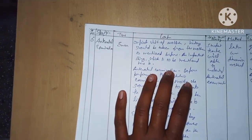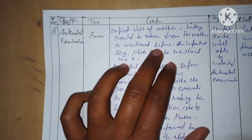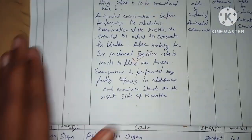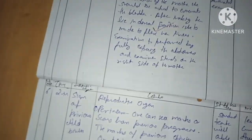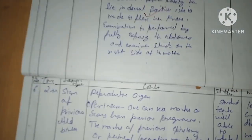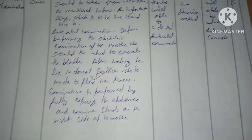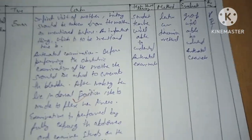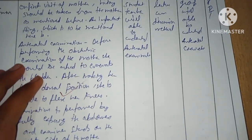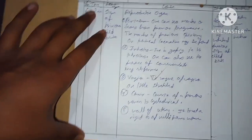Sixth point — time: five minutes. Specific objective: antenatal examination. Content: on the first visit, history will be taken from the mother as mentioned. Before performing the objective examination, the mother should be asked to empty the bladder, made to lie in the dorsal position, and made to flex the knees. The examination is performed exploring the abdomen, with the examiner standing on the right side of the mother. Method: lecture cum discussion. Evaluation: group will be able to understand antenatal examination. AV aids: PPT.